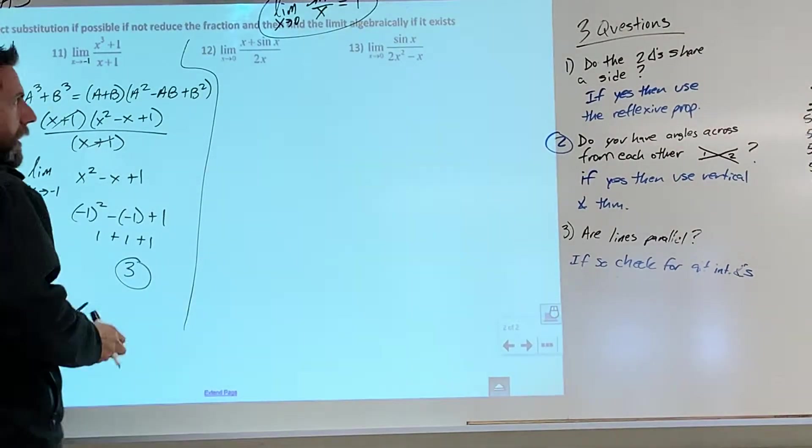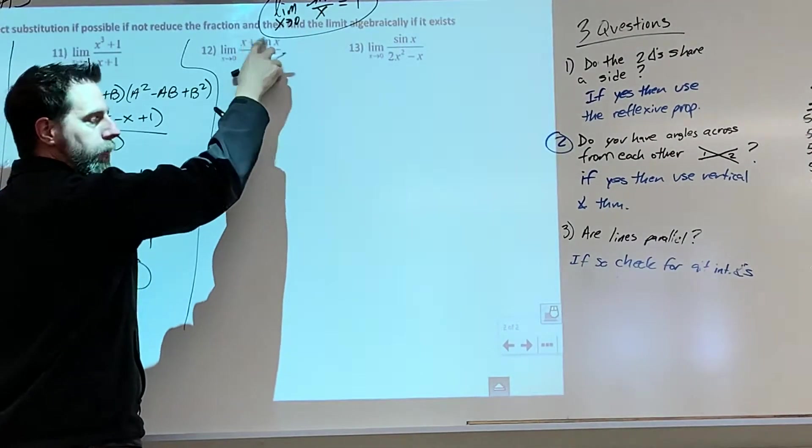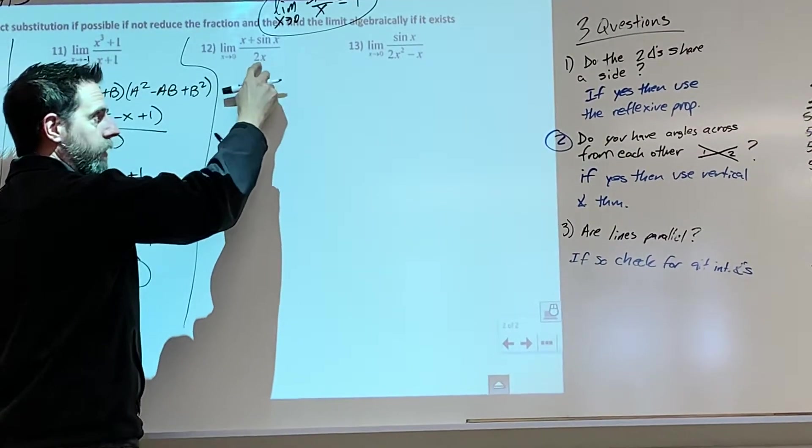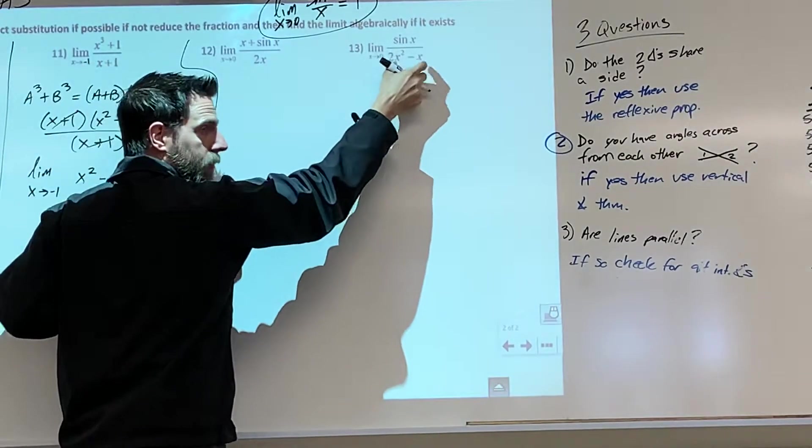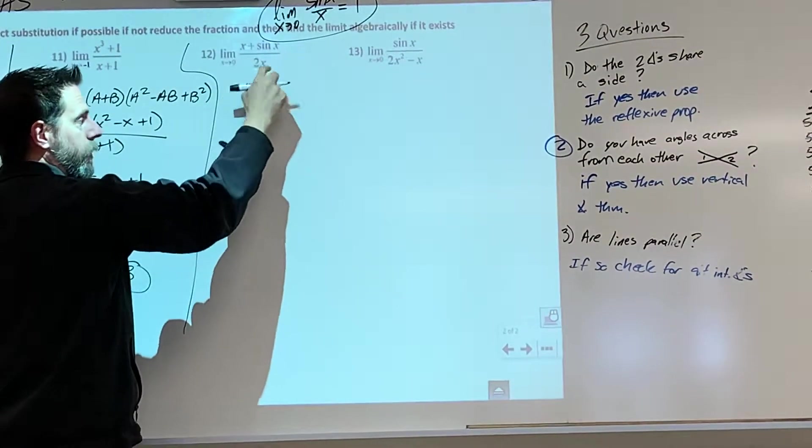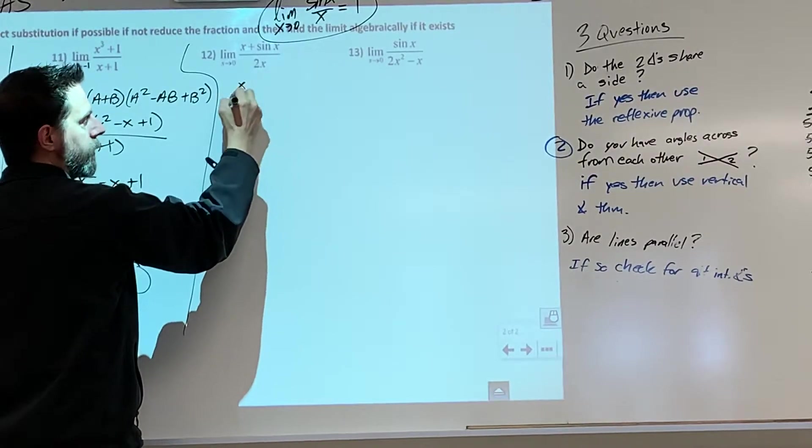So, we go here and we're like, alright, well what can I do? Now notice this is something plus something over one thing, not over something being added. When it's two things on the top, one thing on the bottom, I can rewrite this like this.